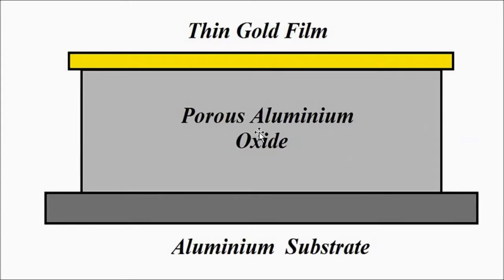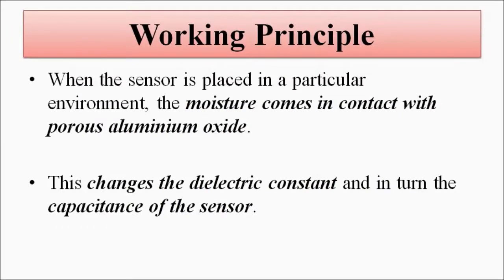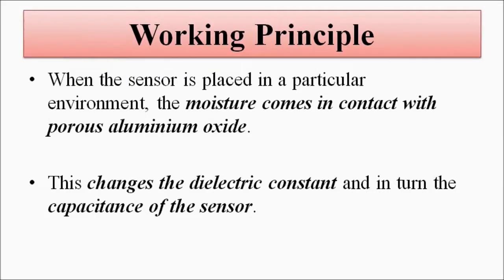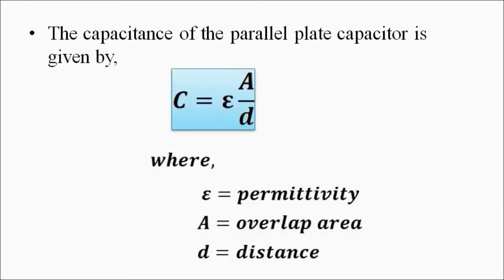The basic setup: the aluminum substrate acts as the base — one plate of the capacitor, one electrode — and the gold film is the other plate, with porous aluminum oxide between them. This is the sensitive material which responds to changing humidity or moisture levels. When this sensor is placed in a surrounding environment where humidity is to be measured, moisture comes in contact with the porous aluminum oxide, causing a change in permittivity or dielectric constant, which gives rise to a change in capacitance.